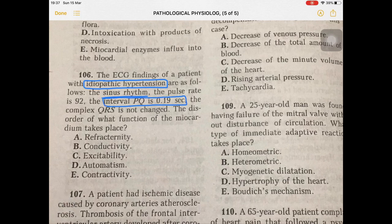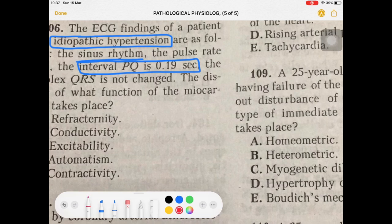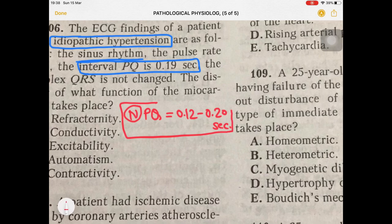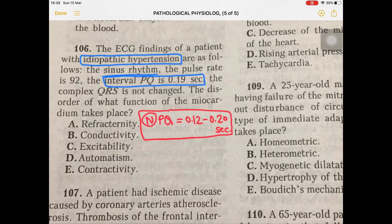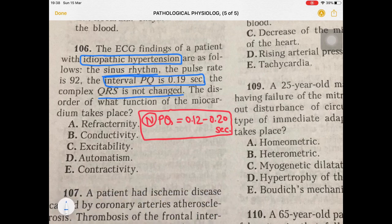The normal PQ interval — also called PR interval — has a range of 0.12 to 0.2 seconds. That is the normal range you need to remember. Further, the question states that the QRS complex is not changed. The disorder of what function of the myocardium takes place? The PQ interval of 0.19 seconds is approaching the highest permissible normal range.